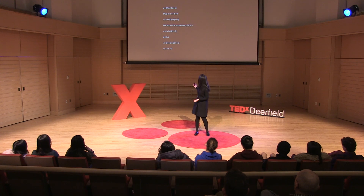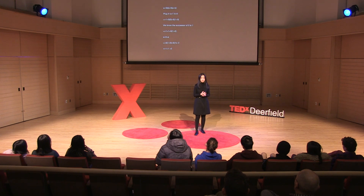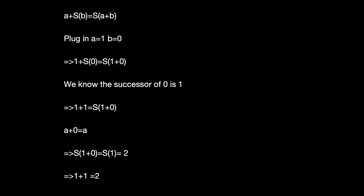This is straightforward after all these definitions. We use the definition of addition directly: A plus S(B) equals S(A plus B). Plugging in A equals 1 and B equals 0, we get 1 plus S(0) equals S(1 plus 0). We know the successor of 0 is 1, so S(0) is 1. Thus 1 plus 1 equals S(1 plus 0). By the definition of addition, A plus 0 equals A, so S(1 plus 0) equals S(1), which is 2 by definition. So finally, 1 plus 1 equals 2.